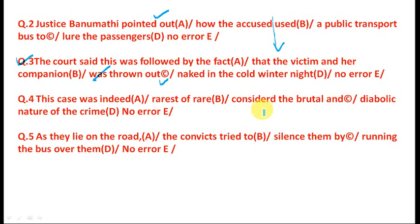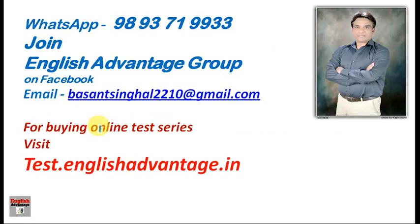Question five: 'As they lie on the road, the convicts tried to silence them by running the bus over them.' Since the sentence is in the past tense — 'the convicts tried' — we must use the past form of 'lie,' which is 'lay.' So it should be 'as they lay on the road.' The answer is A. These are the WhatsApp and contact details; the WhatsApp number is given here. Kindly join the English Advantage Facebook group to get all notifications.